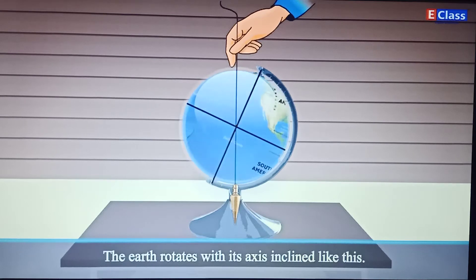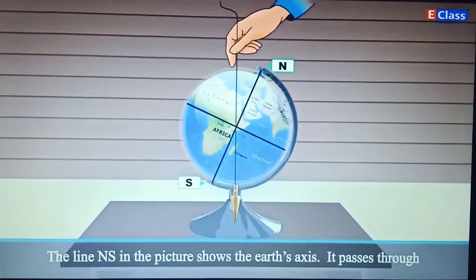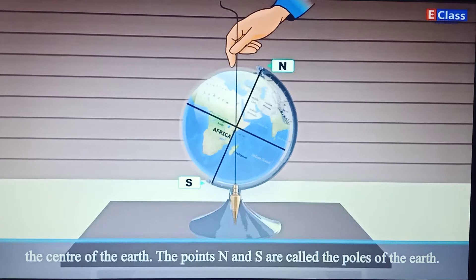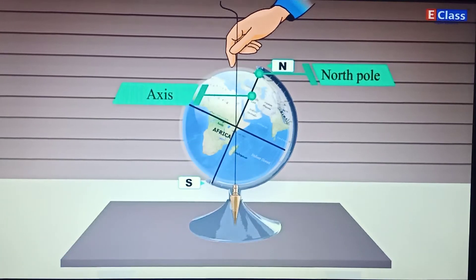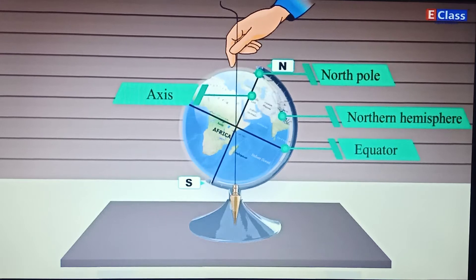The Earth rotates with its axis inclined. The line N-S in the picture shows the Earth's axis. It passes through the center of the Earth. The points N and S are called the poles of the Earth. N is the North Pole and S is the South Pole.